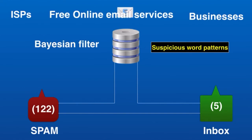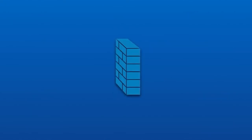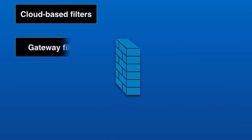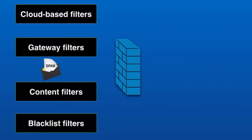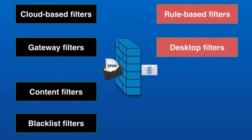For example, whenever users mark emails from a specific sender as spam, the Bayesian filter recognizes the pattern and automatically moves future emails from that sender to the spam folder. There are many other types of spam filters: cloud-based filters hosted on a cloud gateway; filters installed on a computer server; content filters that analyze the text inside an email; blacklist filters that block emails from known spammers; rule-based filters that apply specific rules to all incoming emails; and desktop filters installed locally by users.